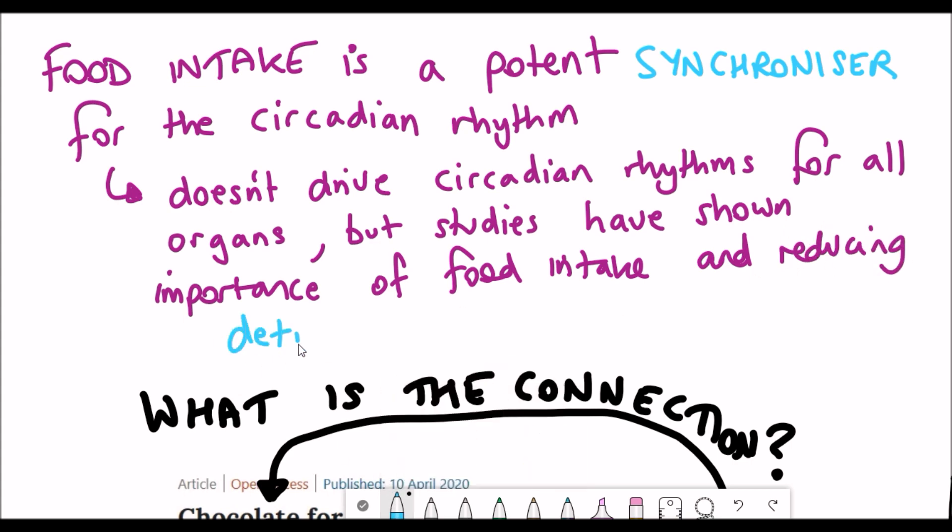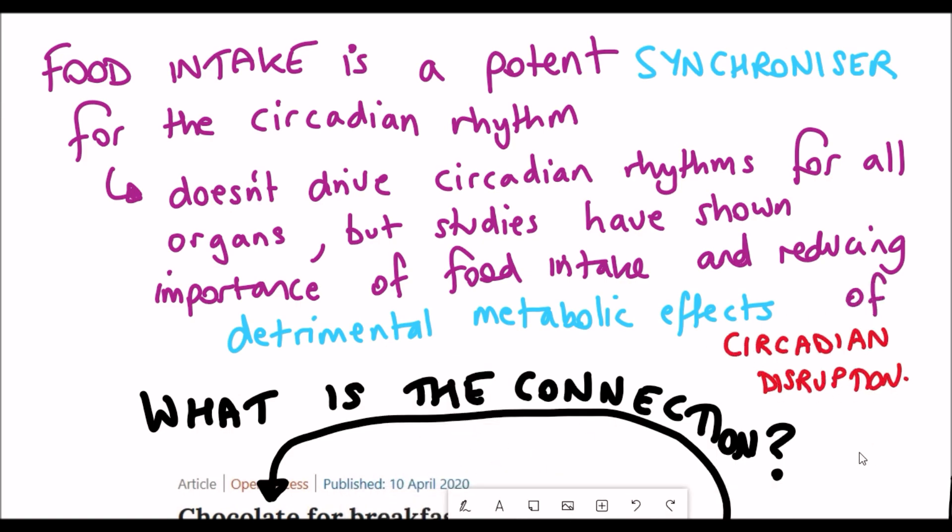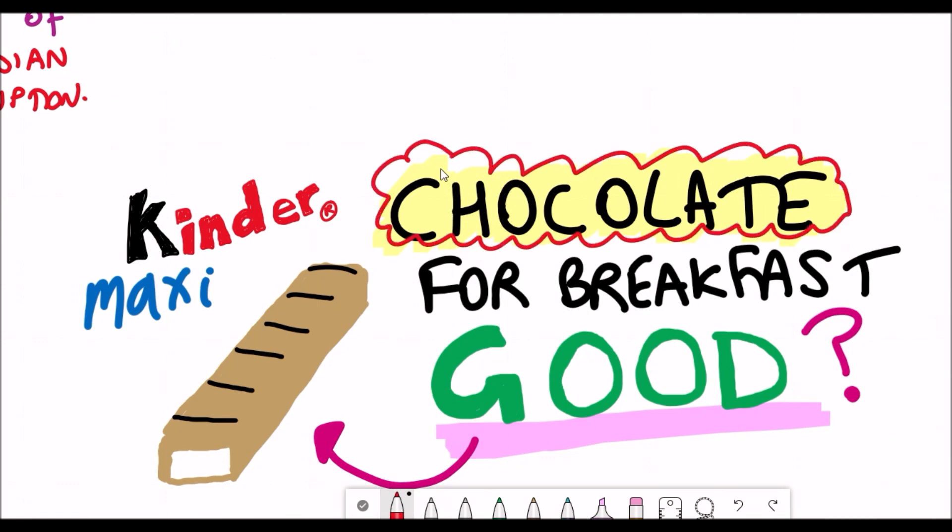There's been many studies that have shown the importance of regulating food intake to reduce the detrimental metabolic effects of circadian disruption. Okay but still why chocolate, why not apples?